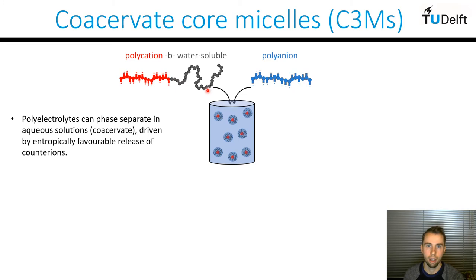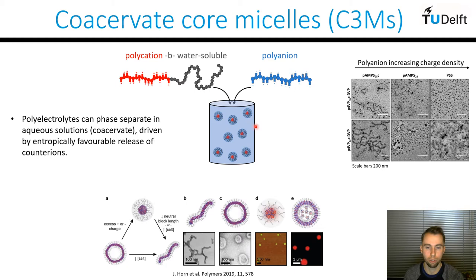Much like amphiphilic micelles, coacervate core micelles can obtain a range of morphologies from spheres to worms to vesicles. This can be done by playing with the block length ratio — the size of your polycation and polyanion water-soluble block — as well as things like pH and salt concentration. In our own lab we've seen transitions from worm-like species to spheres simply by increasing the polyanion charge density.